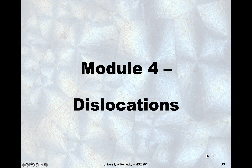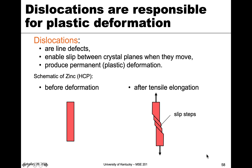In this module we're going to go up in dimensionality and talk about those one-dimensional defects known as dislocations. The reason we talk about dislocations and their importance is because they're responsible for plastic deformation, which is a topic we're going to talk about later when we discuss mechanical properties of materials — specifically permanent deformation that happens within metals and other materials. Dislocations are those line defects, one-dimensional, and they enable what we call slip.